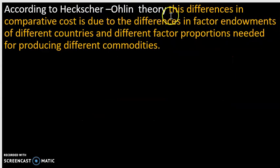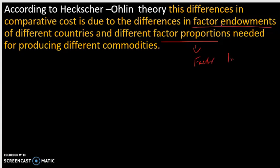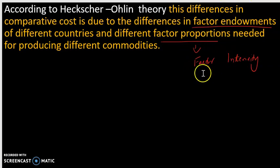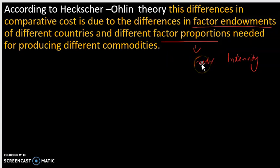The difference in cost of production is because of two things: the first point is factor endowments, and the second is factor intensity. Factor endowments and factor intensity together explain why one commodity has a different production cost in one country compared to another.